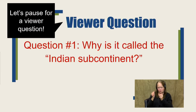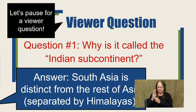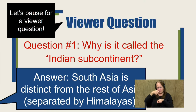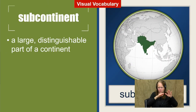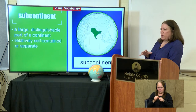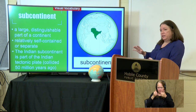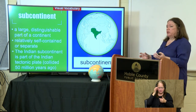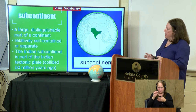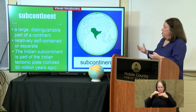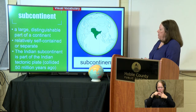Let's stop for a viewer question. You may have heard me say 'Indian subcontinent' — what's the subcontinent part? A subcontinent is an area distinct from the rest of the continent, in this case separated by the Himalaya Mountains. It's a large, distinguishable, relatively self-contained area. The Indian subcontinent used to be its own tectonic plate, and about 50 million years ago it basically crashed into the Eurasian plate, which formed the Himalaya Mountains.